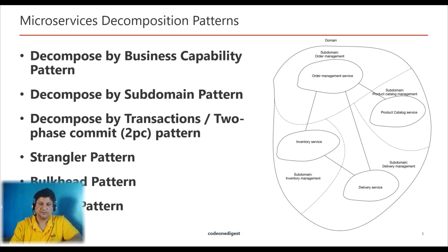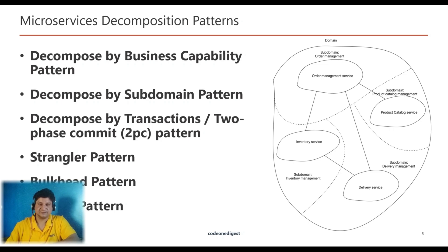The Strangler pattern: mostly we work with brownfield applications which are big monolithic legacy code bases. The Strangler pattern creates two separate applications that live side-by-side in the same URI space; over time, the new refactored application strangles or replaces the original. The Bulkhead pattern isolates elements of an application into pools so that if one fails, others continue to function. Finally, the Sidecar pattern deploys a component of the application into a separate process or container to provide isolation and encapsulation.